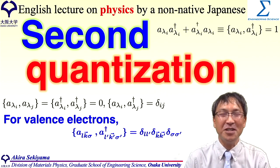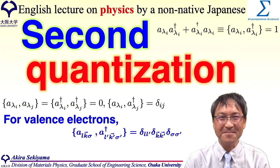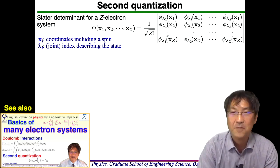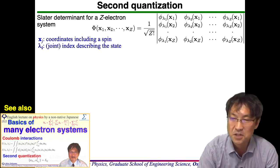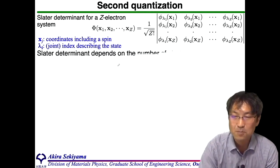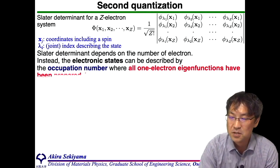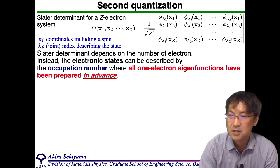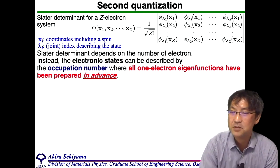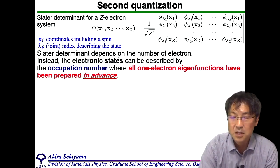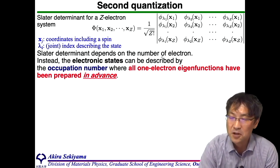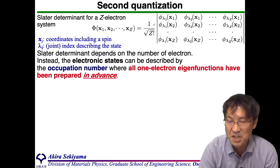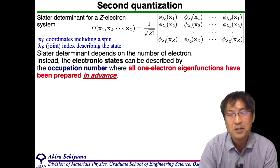Please enjoy this movie. I have explained the Slater determinant for the electron system. There is one problem to use the Slater determinant directly, because the Slater determinant depends on the number of electrons. That means, when the number of electrons is changed, the Slater determinant also changes. That is rather inconvenient.